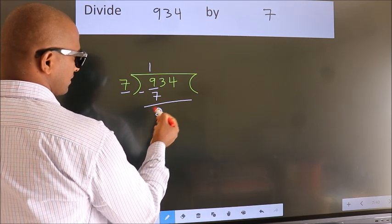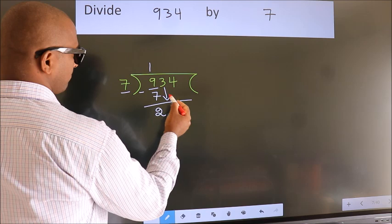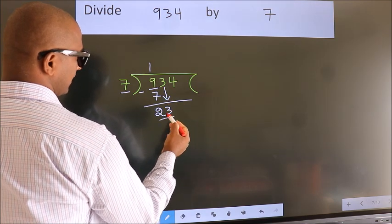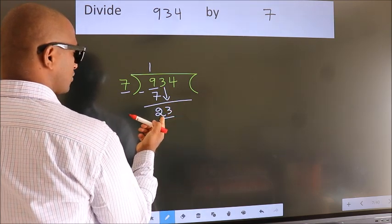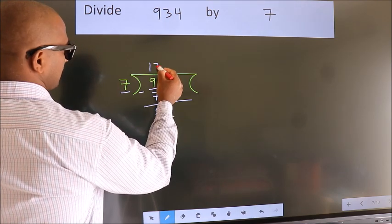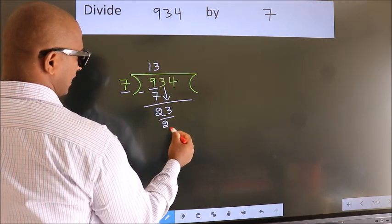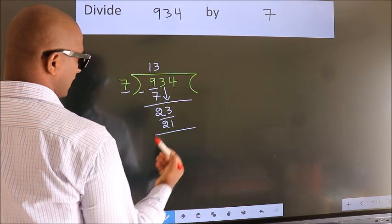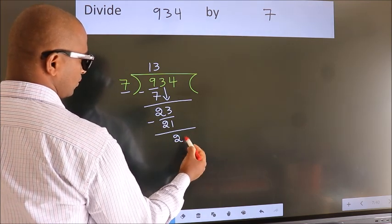After this, bring down the beside number. So 3 down, so 23. A number close to 23 in the 7 table is 7 threes 21. Now we subtract. We get 2.